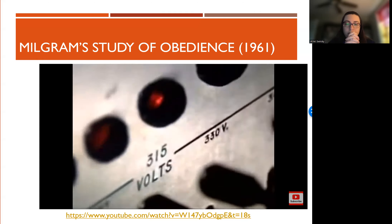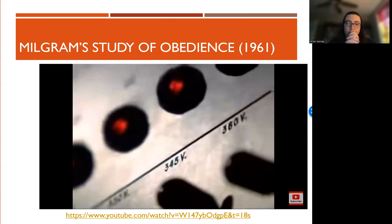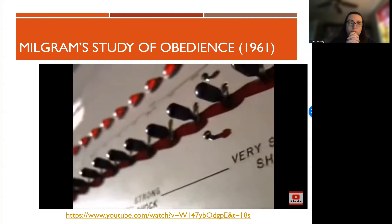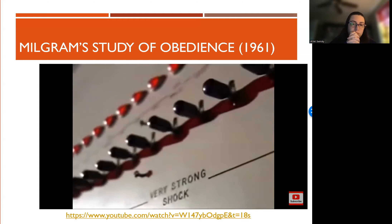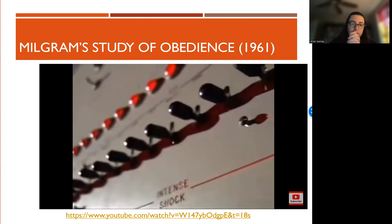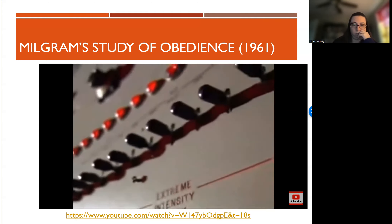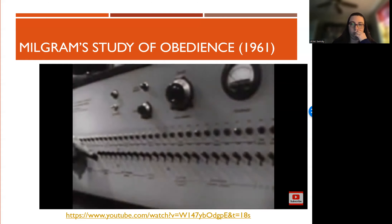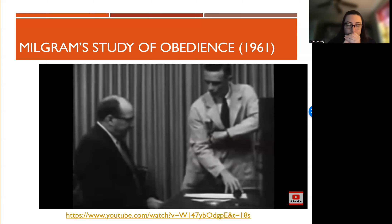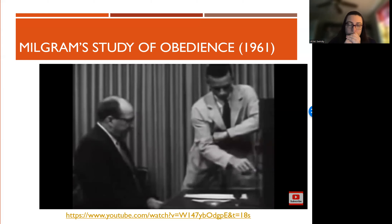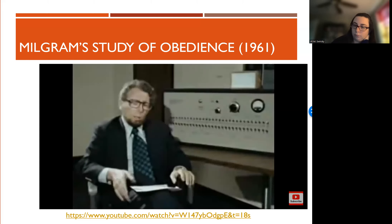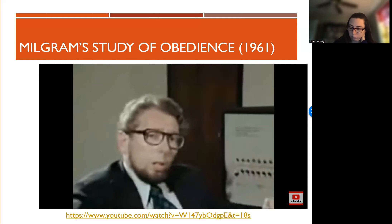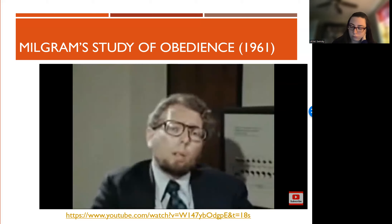As teacher, you were seated in front of this impressive-looking instrument — the shock generator. Its essential feature is a line of switches that goes from 15 volts to 450 volts, and a set of verbal designations that goes from slight shock to moderate shock, strong shock, very strong shock, intense shock, extreme intensity shock, and finally XXX, danger severe shock. Your job, the experimenter explains, is to do a word pair test. If the learner gets each answer correctly, you move on to the next pair. But if he makes a mistake, you were instructed to give him an electric shock, starting with 15 volts, and you increase the shock one step on each error.